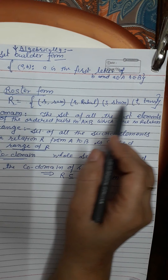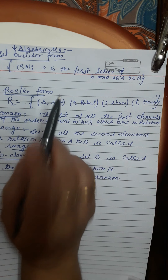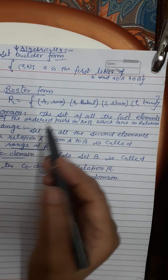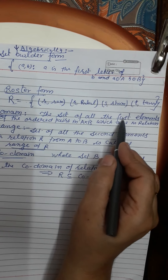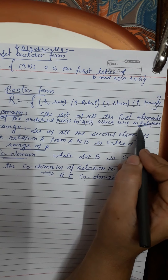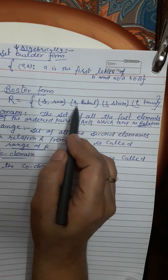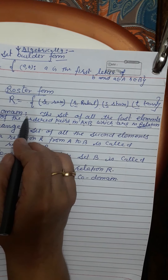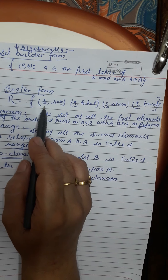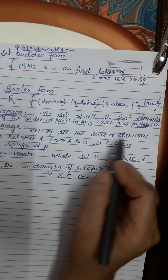We must remember that here we are only taking those ordered pairs which have a relation among them. Although A cross B has 15 elements, in the relation we only take the ordered pairs that are related. Now, the domain: the set of all the first elements of ordered pairs in A cross B which are in relation — that is R, S, T — is called the domain.